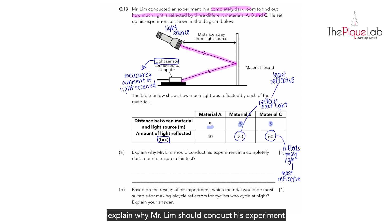Part A asks, explain why Mr. Lim should conduct his experiment in a completely dark room to ensure a fair test. When we see the word to ensure a fair test, students are able to tell me that for a fair test to occur, there must only be one change variable. For this experiment, what is the change variable? We are changing the material, the type of material. So the change variable for this question is the type of material.